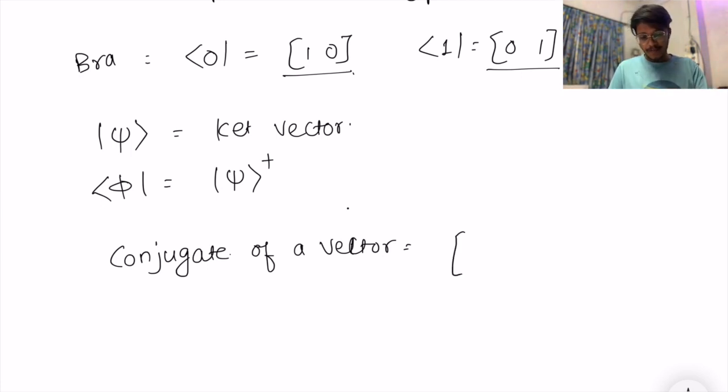For example, if your vector is one and i, this is a complex number, then its conjugate will be one and negative i.